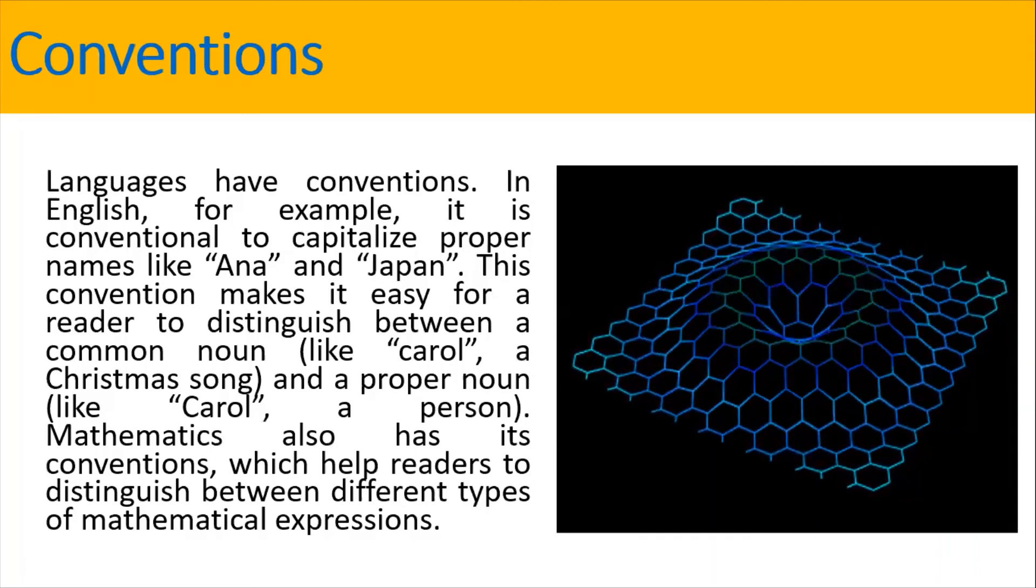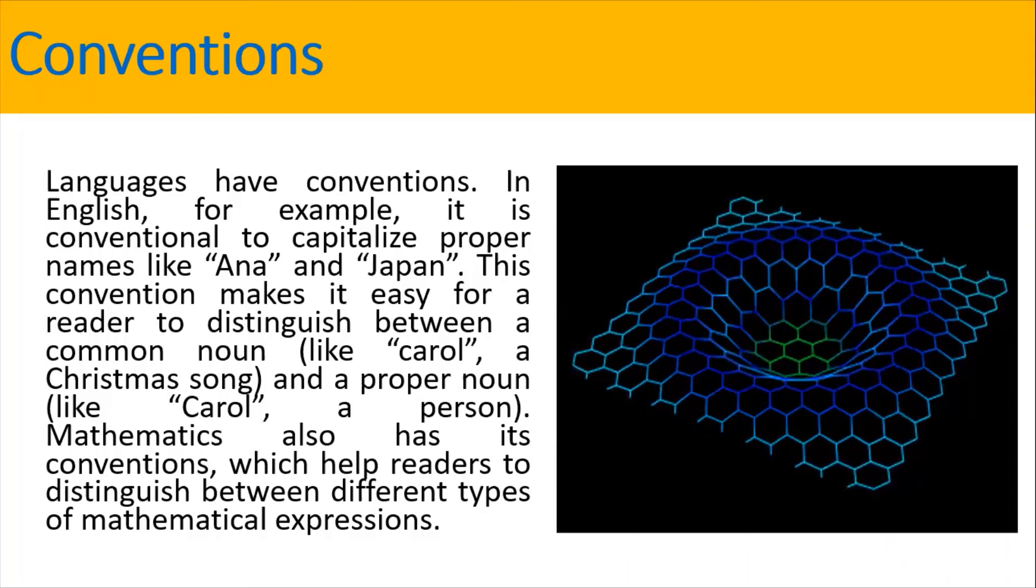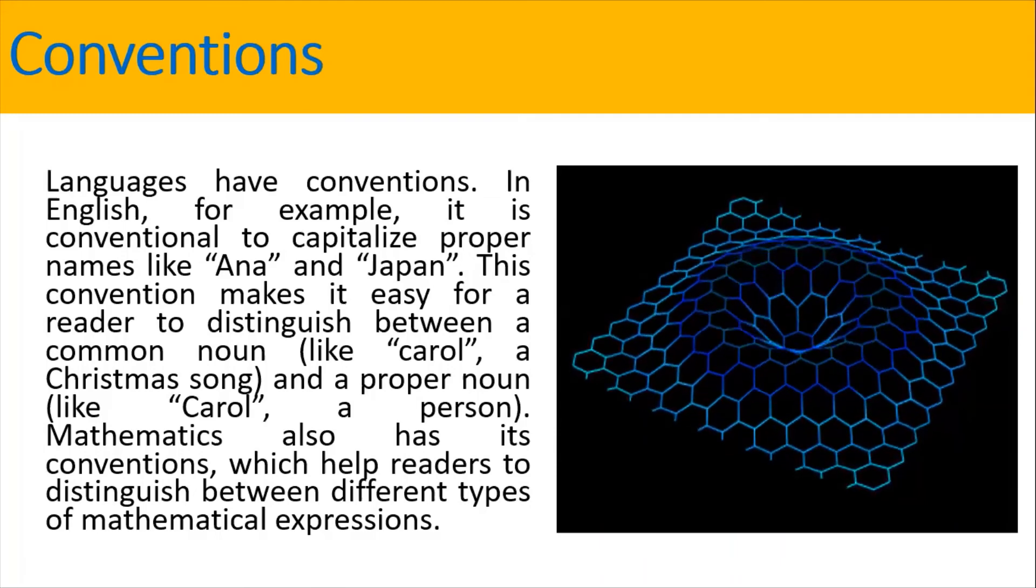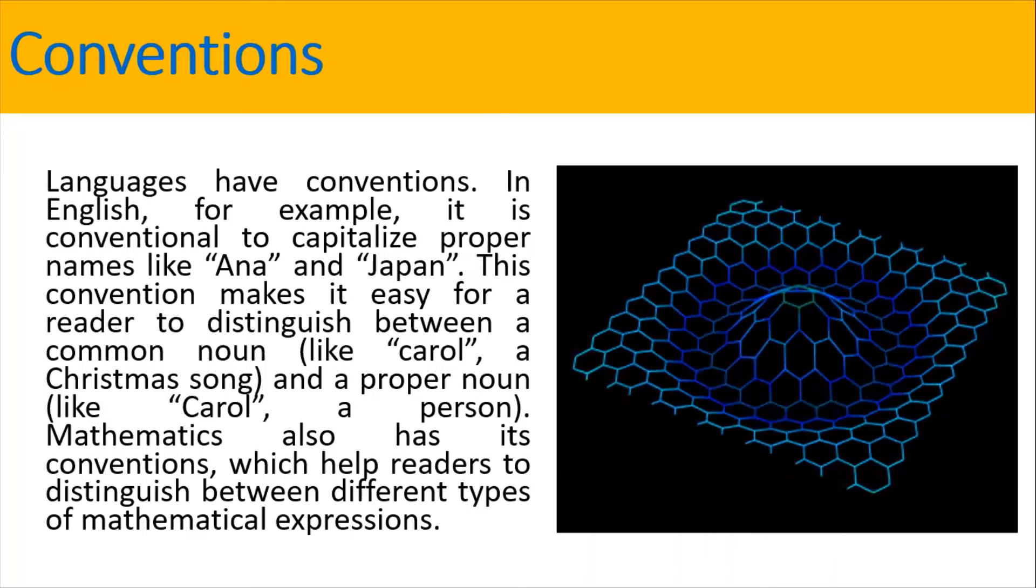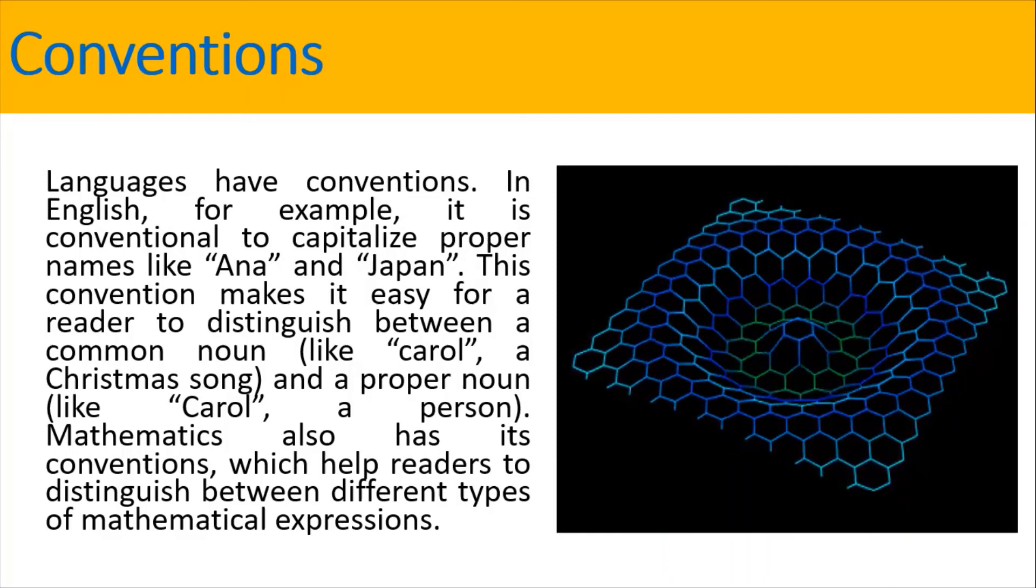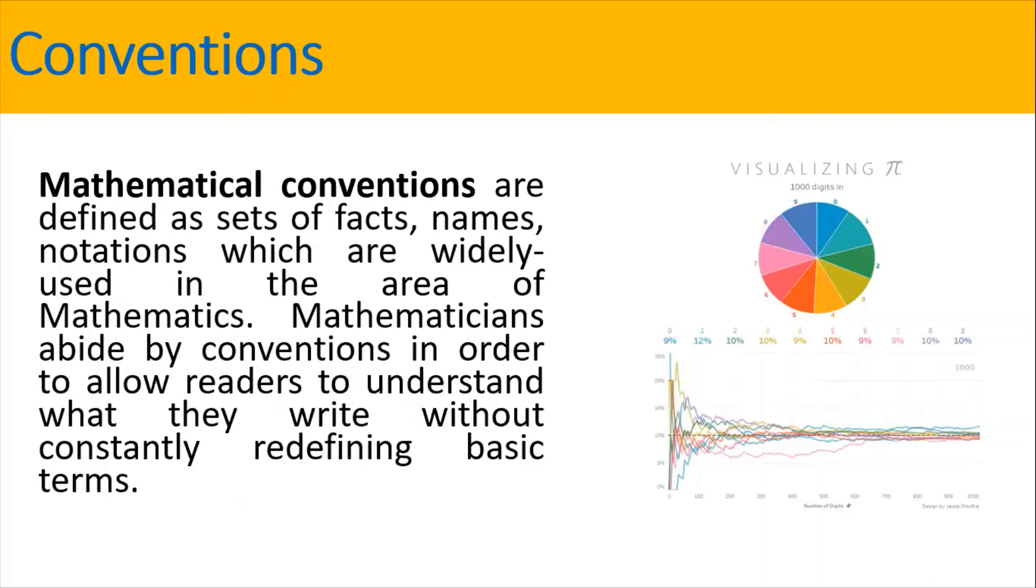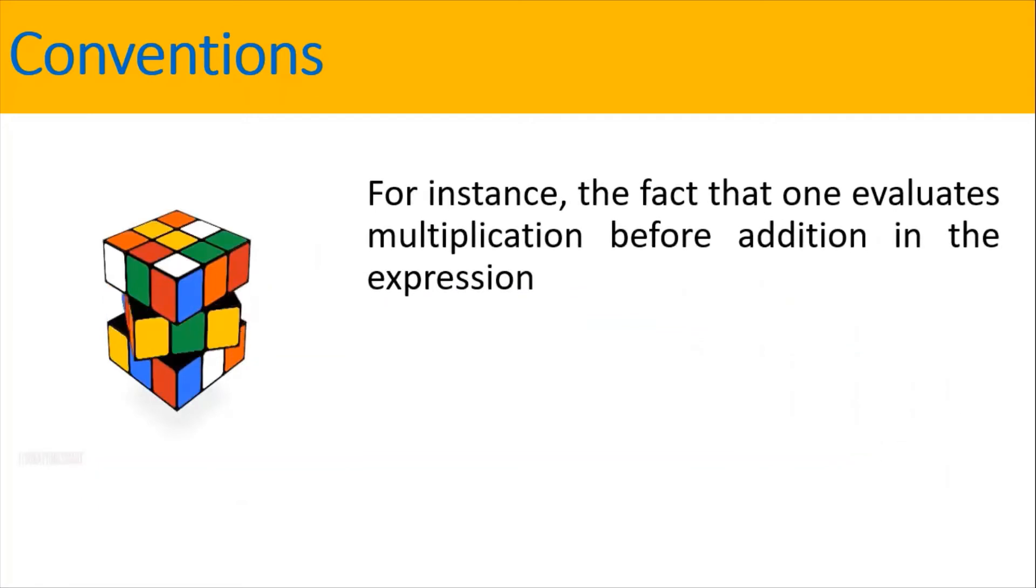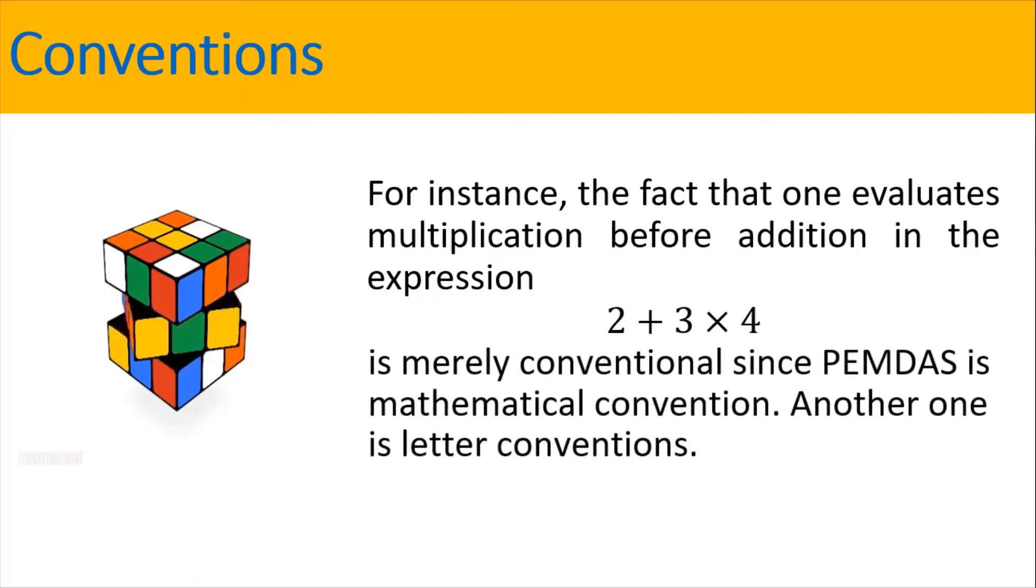Multiplicative inverses are commonly known as reciprocals. Now, for conventions, languages have conventions. In English, for example, it is conventional to capitalize proper names like Anna and Japan. This convention makes it easy for a reader to distinguish between a common noun, like carol, a question song, and a proper noun, like Carol, a person. Mathematics also has its conventions, which help readers to distinguish between different types of mathematical expressions. Mathematical conventions are defined as sets of facts, names, notations, which are widely used in the area of mathematics. Mathematicians abide by conventions in order to allow readers to understand what they write without constructive redefining basic terms. For instance, the fact that one evaluates multiplication before addition to the expression 2 plus 3 times 4 is merely conventional since PEMDAS is mathematical convention.